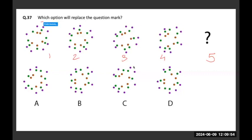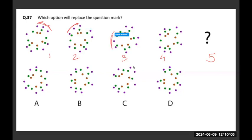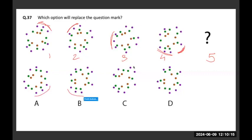These three dots in the second figure come here; in the third figure they come here; in the fourth figure they come here. In the fifth figure they have to come somewhere in this quadrant. Looking at the options — in A it happens here, in B it happens here, in C it happens here, and in D it happens here. So B and C are wrong, and A and D are still in running.